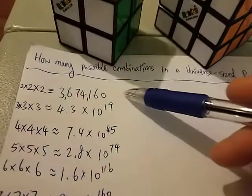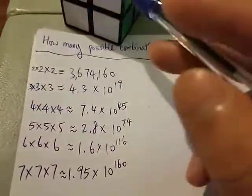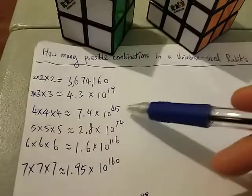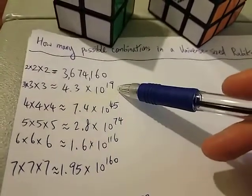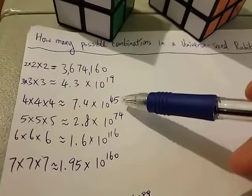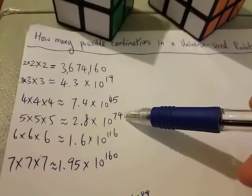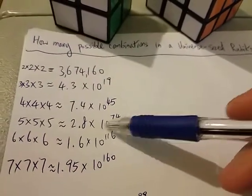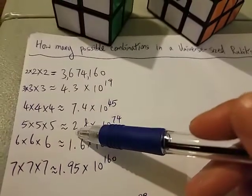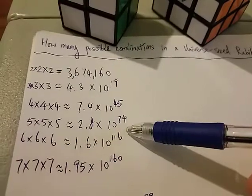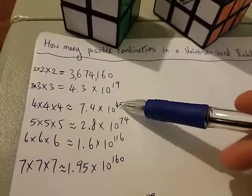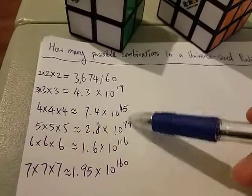As you can see, as the size increases, just increase by 1, the total number of combinations increases rapidly. This number means it's 2 followed by 74 zeros. So there's a kind of big jump between these two.